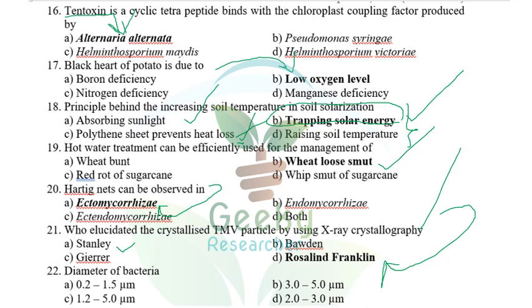The diameter of bacteria: I was confused. They were asking only about diameter, which is 0.2 to 1.5 micrometers. I initially went with 3 to 5.0 micrometers, but the correct answer is 0.2 to 1.5 micrometers in diameter.